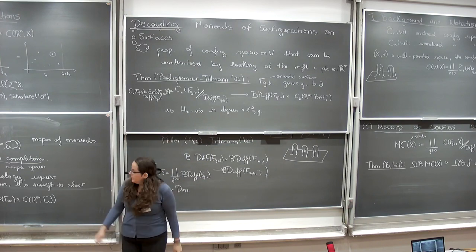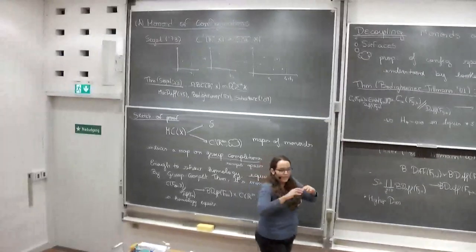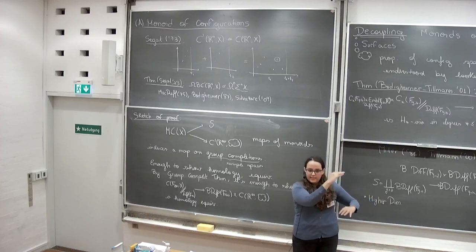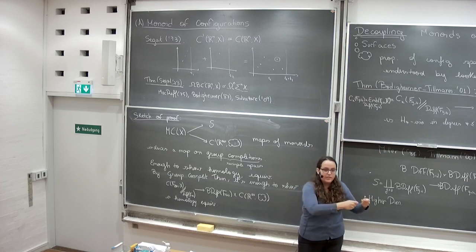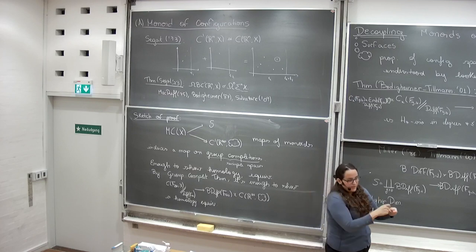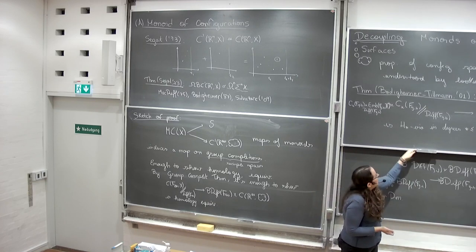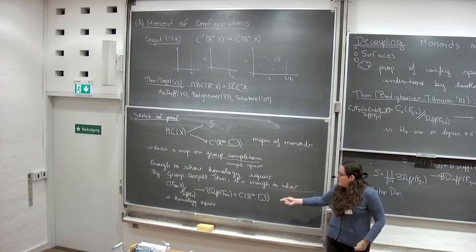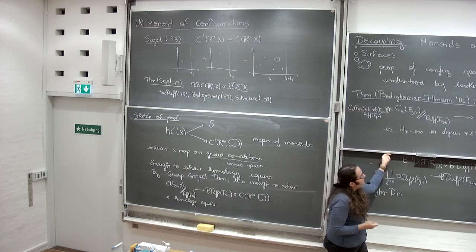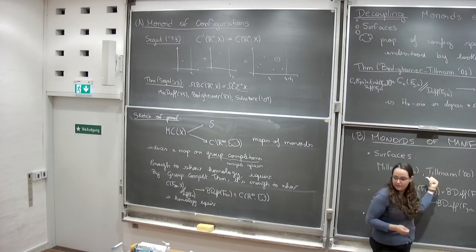What is different here is that we introduce labels. When you introduce labels, the configuration spaces are not separated by the number of points — because you can have ten points and then one label goes to the base point and that point disappears. So there's a path from the space of configurations with ten points to fewer. Here we had a result for a fixed number of points, and here all of these are mixed up. But that's fine — we can still deal with that.